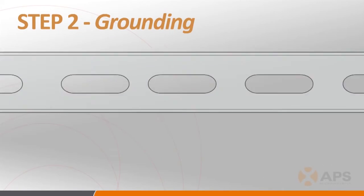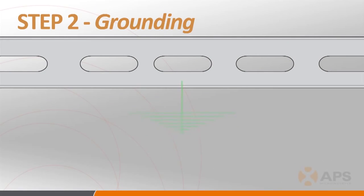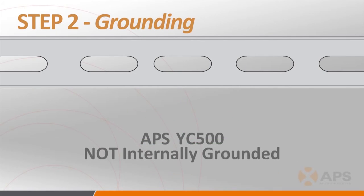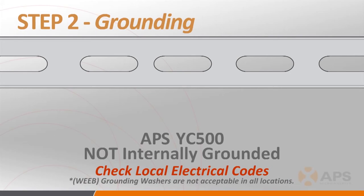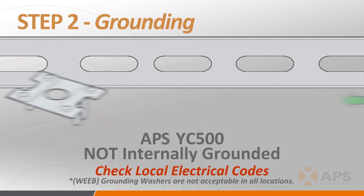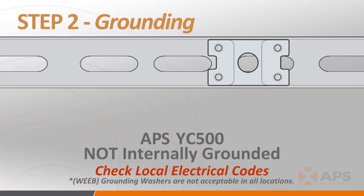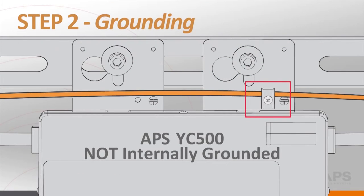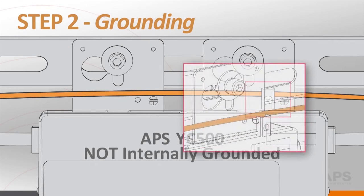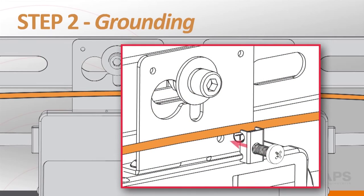Step 2 is making sure that the inverters are properly grounded throughout the system. The YC500 is not internally grounded within the chassis, so it requires an external ground. Depending on your jurisdiction — and it's always best to check with your local inspector — you can either use a grounding washer when attaching the inverter to the rail of a well-grounded racking system, or you can use the grounding lug on the YC500 to string bare copper wire to an appropriate system grounding location.